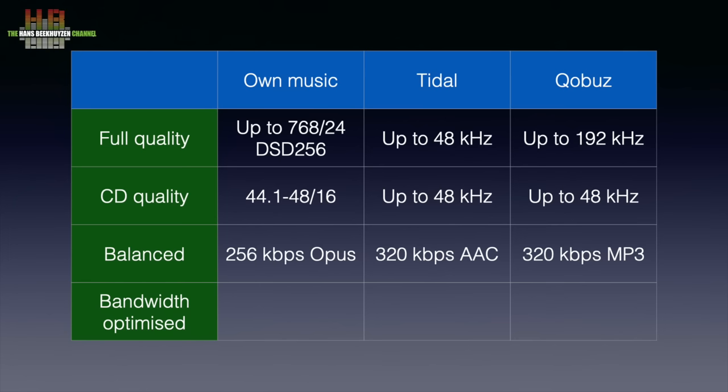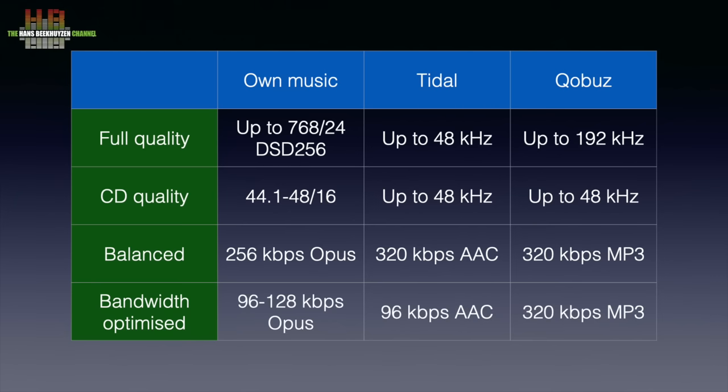Tidal tracks will be 320 kbps AAC and Qobuz tracks 320 kbps MP3. When almost no bandwidth or data budget is available, ARC will be sent 96 kbps Opus, Tidal tracks 96 kbps AAC, and Qobuz 320 kbps MP3. Using ARC on Android phones means there is no bit-perfect reproduction, since bit-perfect playback is not facilitated by Android OS, which converts all audio to 48 kHz. Although there is a way to circumvent the Android auto conversion, ARC does not do that — perhaps in a later version.